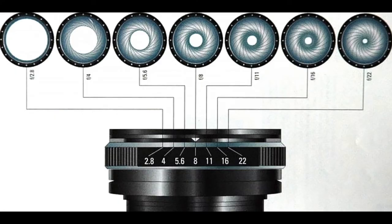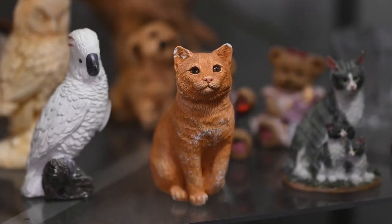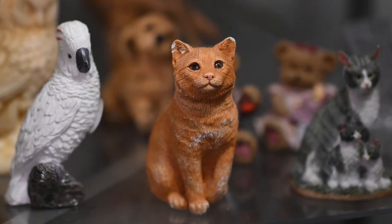So let's talk about aperture first. We know that a large aperture lets in a lot of light, and smaller apertures let in less light. But a large aperture also gives you less depth of field, and smaller apertures give you more depth of field. So you ask, what is depth of field, and why is it important?